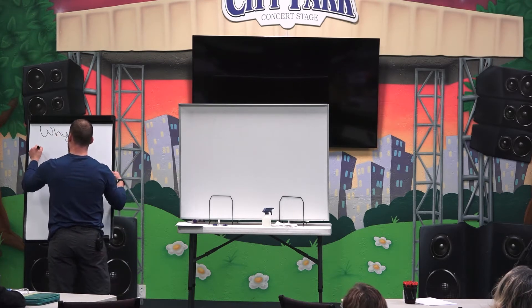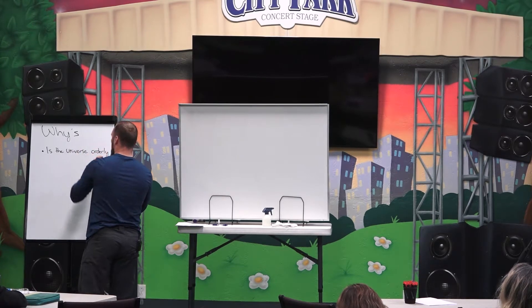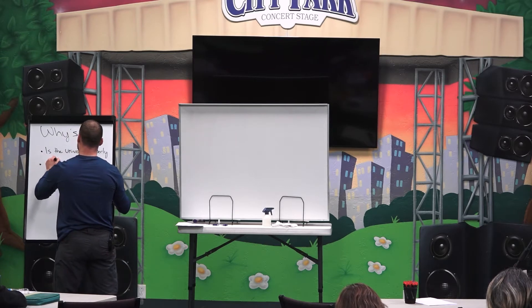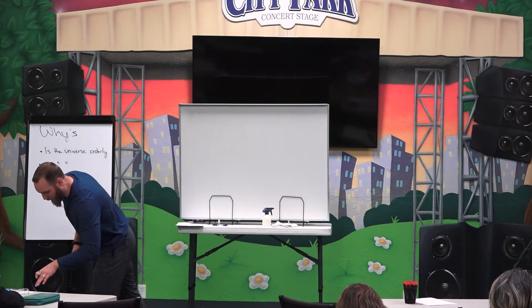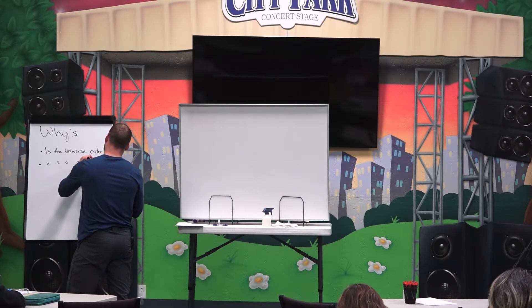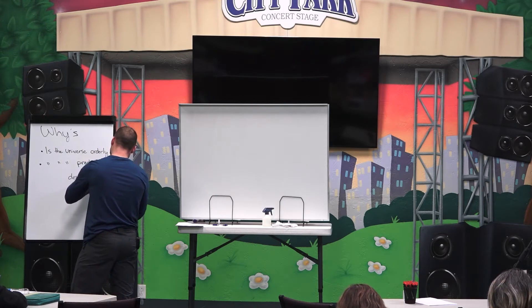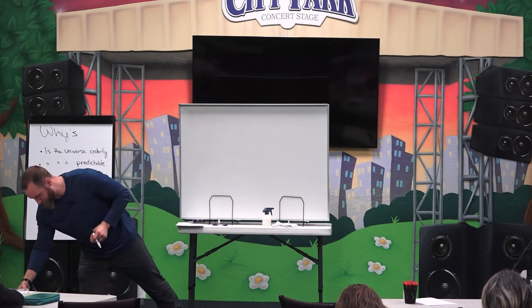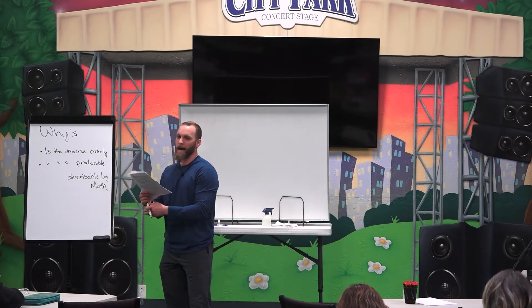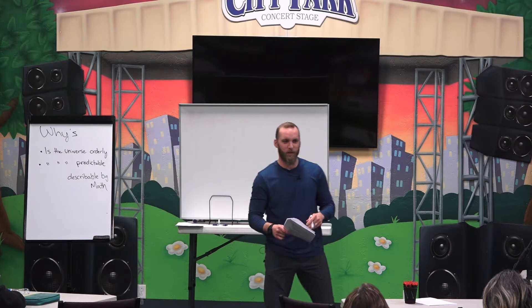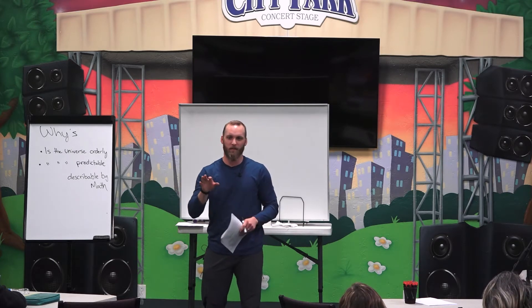Why is the universe orderly? Why is it predictable? Why is it describable by math? What I pose tonight — and a lot of other people have posed before me — is that science is built just as much on faith as any world religion. Faith in these three principles: the universe is orderly, predictable, and describable mathematically — in addition to the law of causality we covered last week.